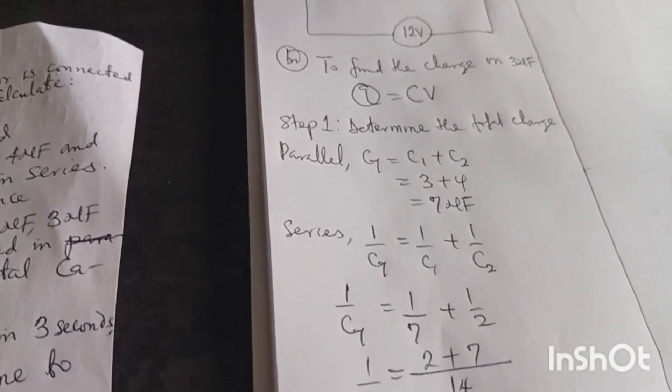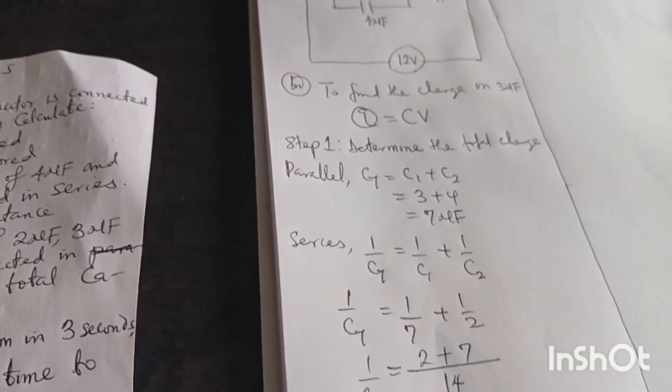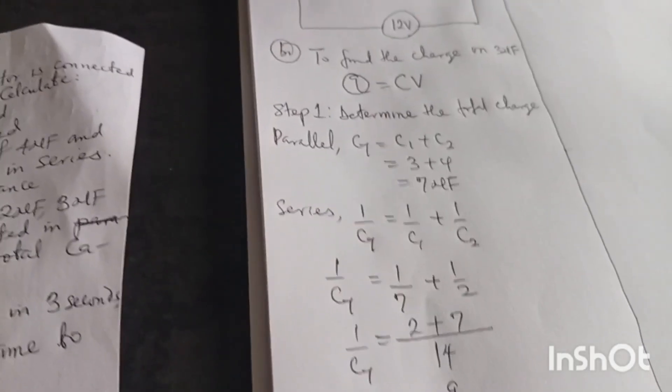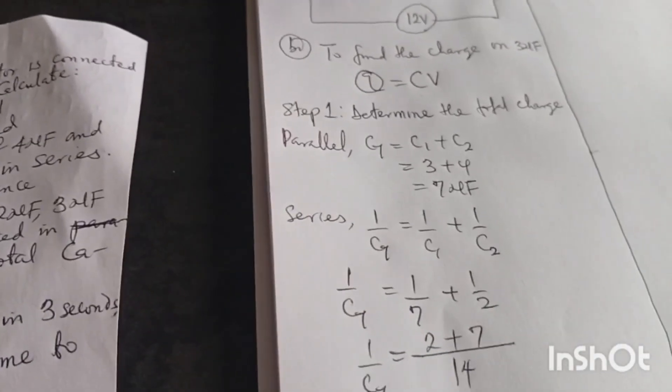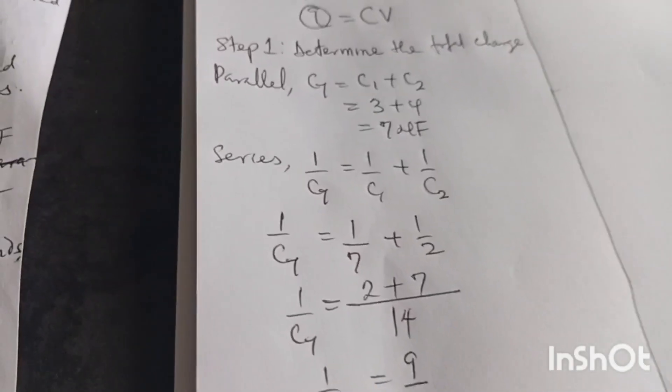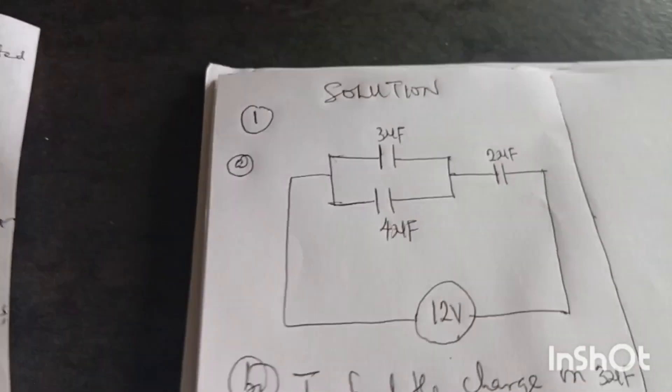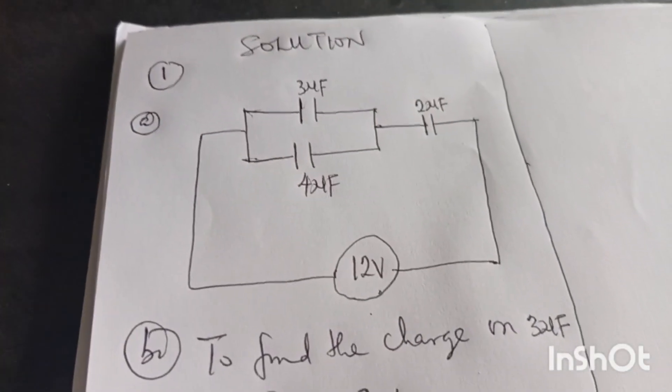The question says we should find the charge on 3 microfarad. We now need to know something. What is that that we need to know? We need to know the way you talk about capacitors. When capacitors are arranged in parallel, the voltage is the same.